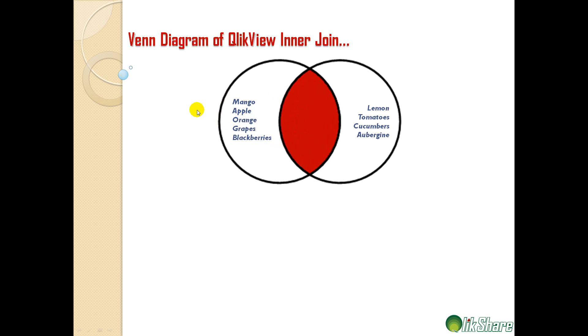On the left hand side we have fruits which is mango, apple, orange, grapes, and blackberries. On the right hand side we have vegetables like lemon, tomatoes, cucumber, and aubergine. And we're trying to do an inner join.